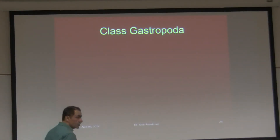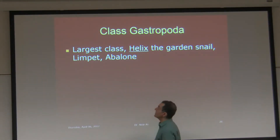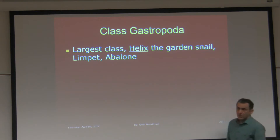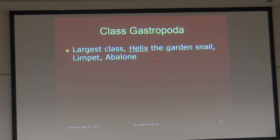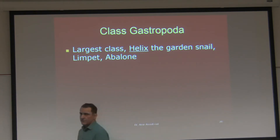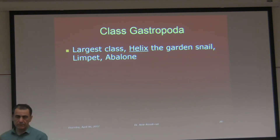The next class — the largest class as far as number of species — includes the garden snail Helix, limpet, and abalone. If you're familiar with abalone, it's a delicacy; you go to a restaurant and order abalone, it probably costs 40 or 50 bucks, maybe more. I've never gone anywhere that has abalone.